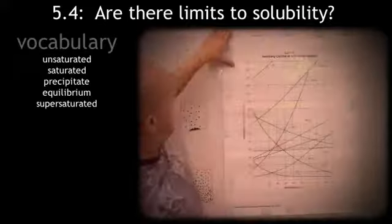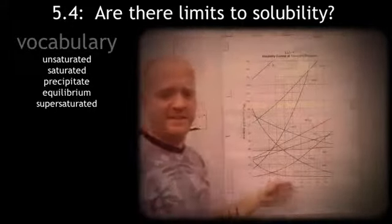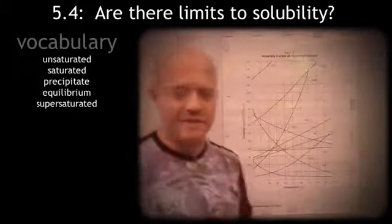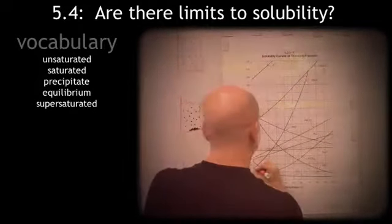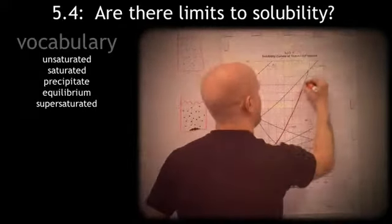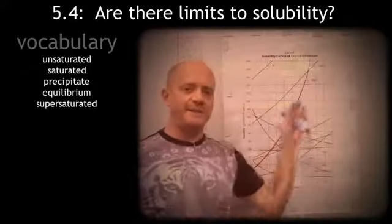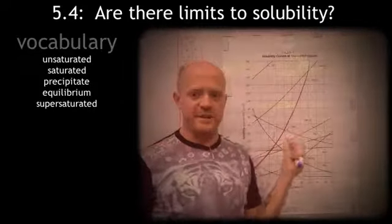Now, there's a whole bunch of different substances present here, but we're only going to pay attention to one in particular, and that is potassium nitrate, or KNO3. So each one of these lines is going to be individual for each substance.